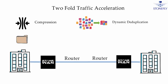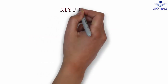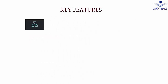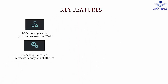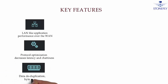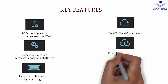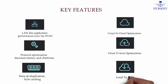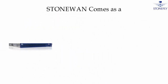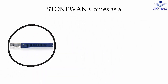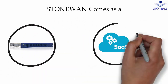Using these techniques, data transfer is delivered at a higher data transfer rate. Key features include LAN-like application performance over WAN, protocol optimization which reduces latency and chattiness, data deduplication, byte caching, cloud to cloud, cloud to local, and local to cloud optimization. Stone Van comes as an appliance that delivers faster data communication and as a Software as a Service, SaaS.